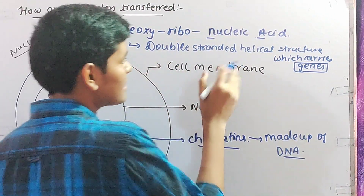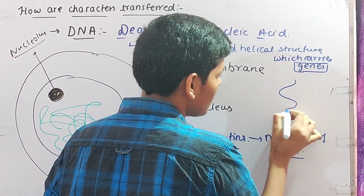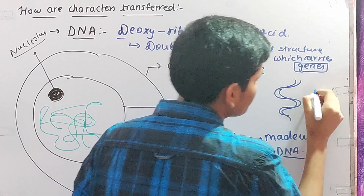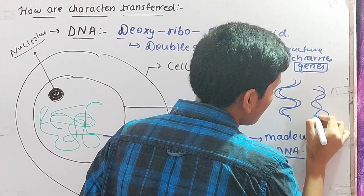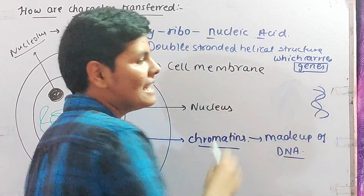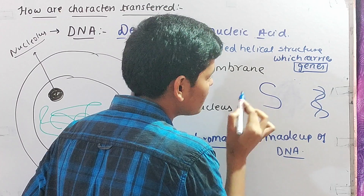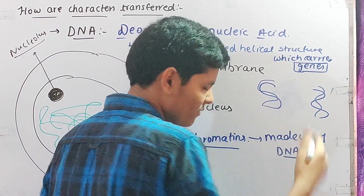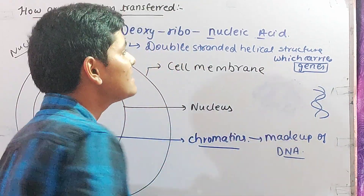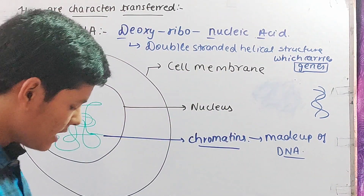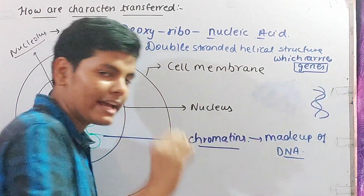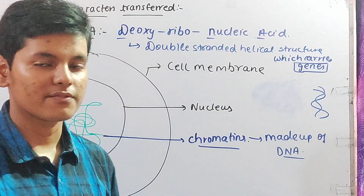DNA is actually a double-stranded helical structure which carries genes. It has two strands — one strand and a second strand — wound in a helical, spiral shape. This is the DNA structure. DNA is a nucleic acid, meaning it is also the carrier of a gene. Now, what is a gene? We will understand that in a few moments. Before that, we need to understand the function of chromatins.